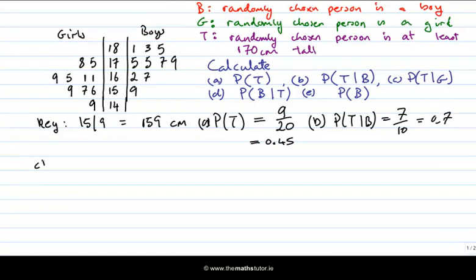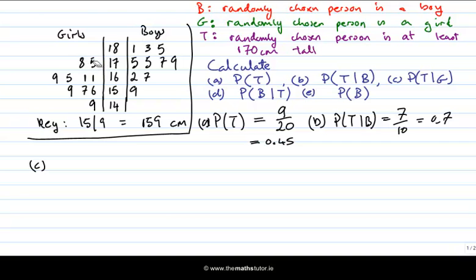For P(T|G) — the probability that the person is above 170 given that they're a girl — we look only at the girls. In the relevant rows we have two outcomes, and the total number of girls is 10, so P(T|G) = two over ten, which is 0.2.